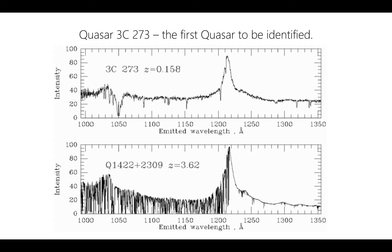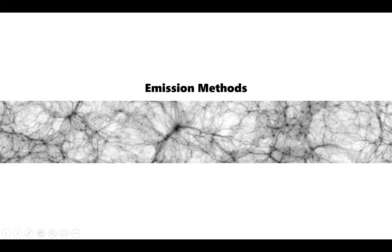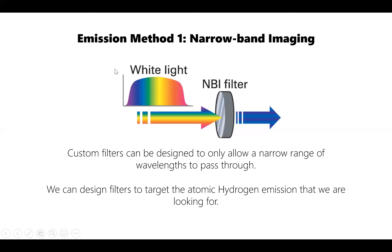Absorption studies don't give you an image — it would be much nicer to have an image of the cosmic web, something more intuitive and visually useful. To make maps and images of the cosmic web, we need to look at emission instead. The advantage of emission is that in absorption you're only seeing where light was absorbed from one source, but in emission you can create a full two-dimensional image if it's bright enough to target.